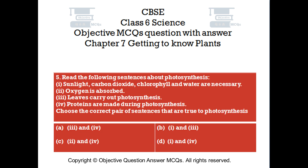Question number 5. Read the following sentences about photosynthesis. 1. Photosynthesis — carbon dioxide, chlorophyll and water are necessary. 2. Oxygen is absorbed. 3. Leaves carry out photosynthesis. 4. Proteins are made during photosynthesis. Choose the correct pair of sentences that are true to photosynthesis.